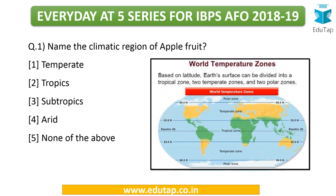Here you can see the entire world map divided into various temperature zones. Near the equator, from 0 to 23.5 degrees north, is the tropical zone — the southern part of India lies in this zone. As you move forward, 23.5 to nearly 40 degrees falls under subtropical, and the northern part of India falls in this zone. Then up to 66.5 degrees is the temperate zone, and finally you have the polar zone.